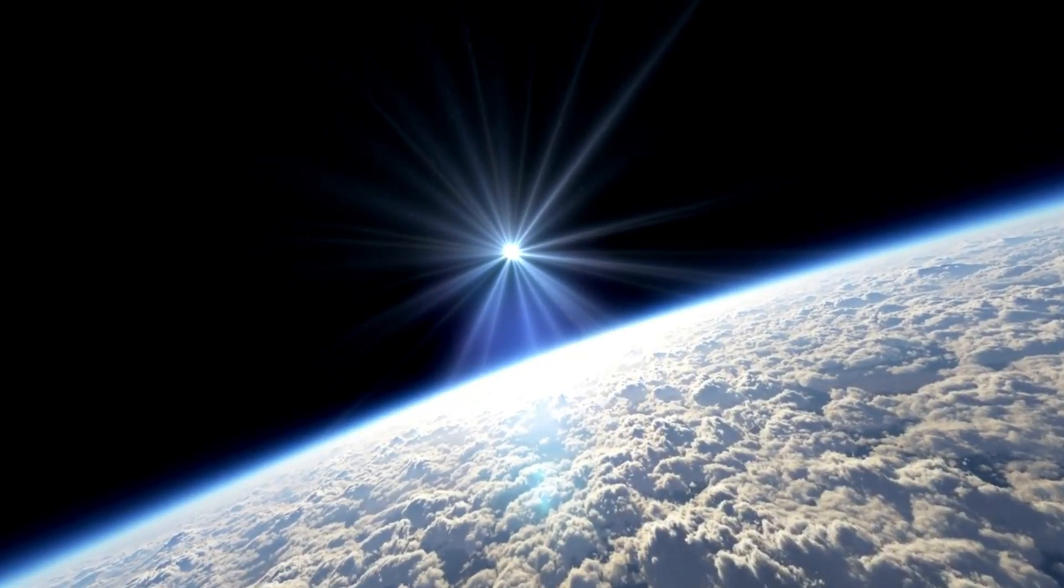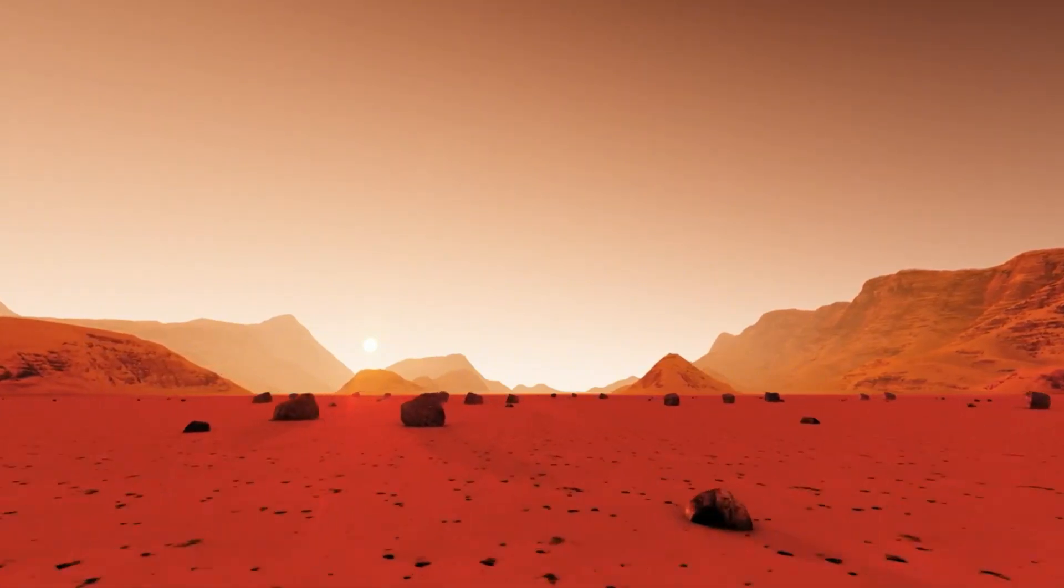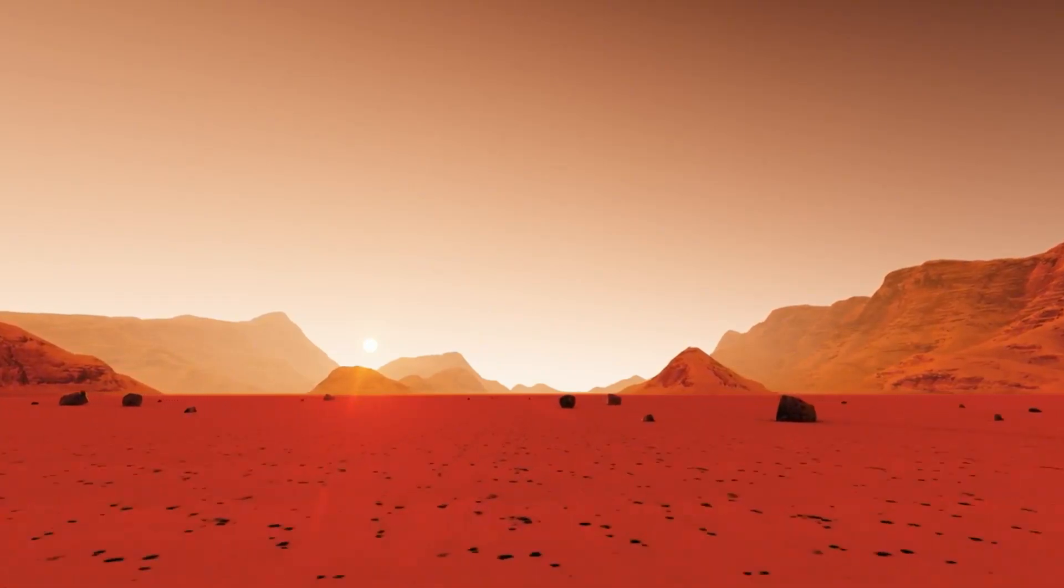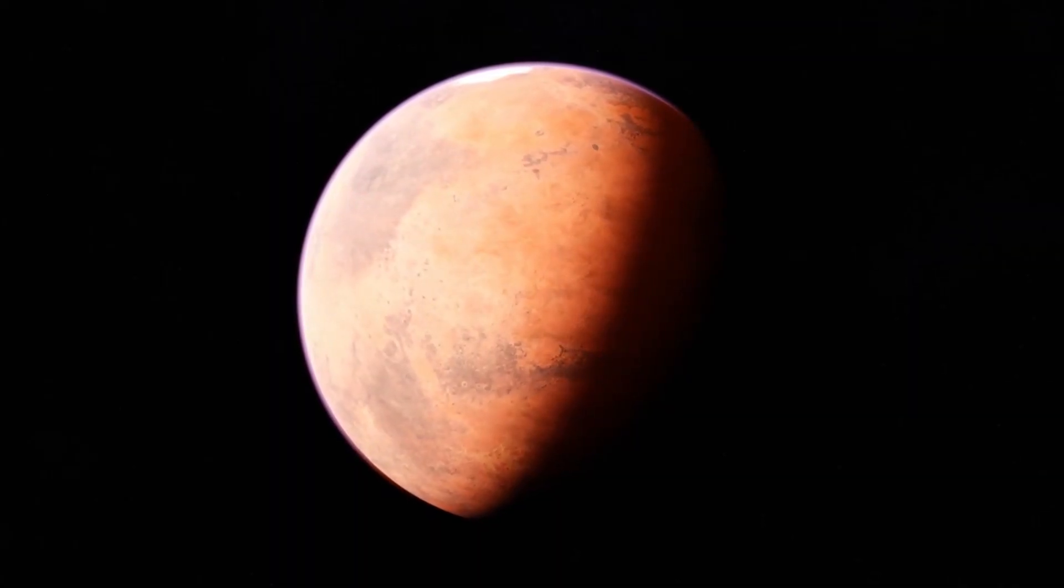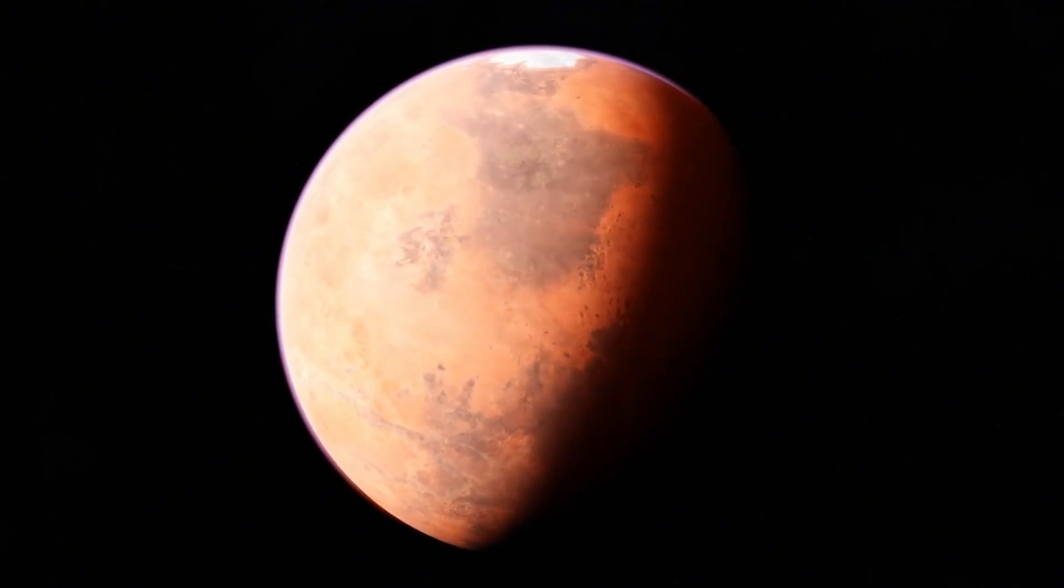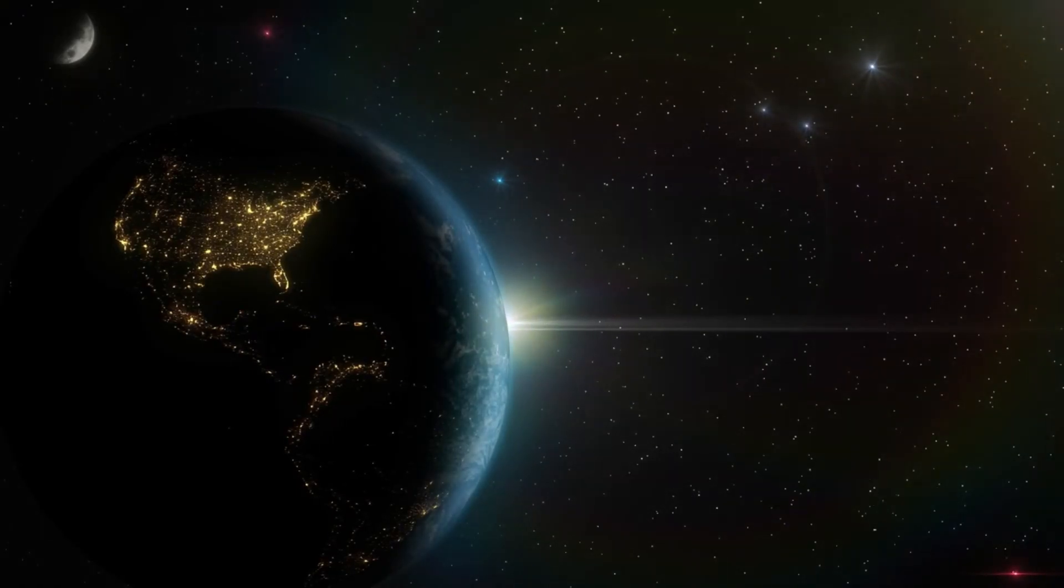Proxima Centauri b isn't alone. It has a companion, Proxima Centauri c, which orbits farther from the star. This planet has an orbital period of around five Earth years, and was discovered in 2020 using pre-recovery Hubble data. Even more interesting about Proxima c is that it appears to be a very bright world, possibly due to the presence of a ring system.